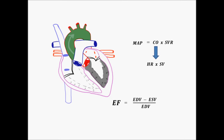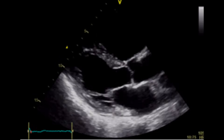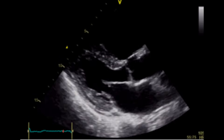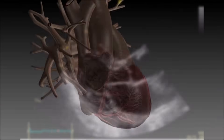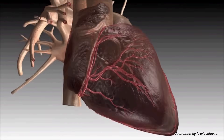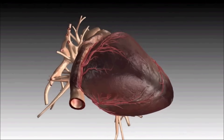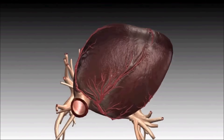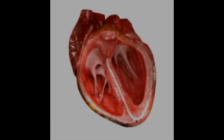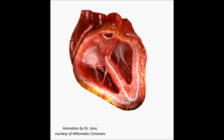Stroke volume is proportionate to ejection fraction and serves as a proxy for stroke volume measurement. Now we have to keep in mind that we're using ultrasound, which is a two-dimensional imaging modality, to estimate a three-dimensional measurement, which will inevitably lead to some drawbacks. Since we're using observations of wall motion to estimate ejection fraction, accuracy will be affected by any regional wall motion abnormalities.